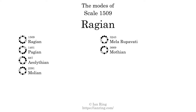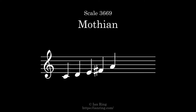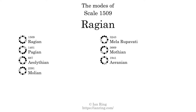The sixth mode is scale 3669, also known as Mothian. It sounds like this. The seventh and last mode is scale 1941, also known as Aranian. It sounds like this.